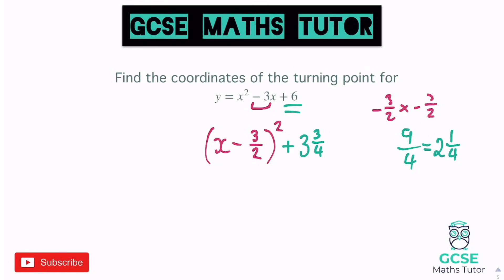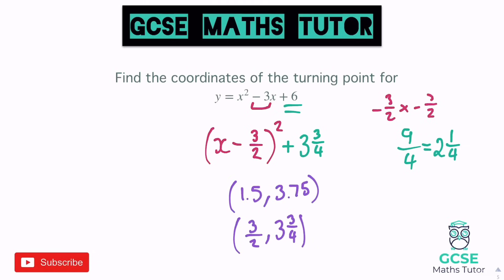So the coordinates here: the x coordinate is positive three-halves — flipping the sign — which you can write as 1.5, and the y coordinate is positive three and three-quarters, or 3.75. That's the coordinate of the turning point. We could write them as one and a half and three and three-quarters. There we go — that's completing the square with fractional results.